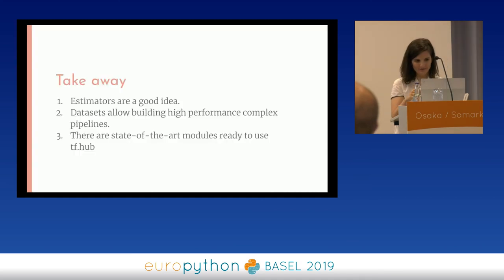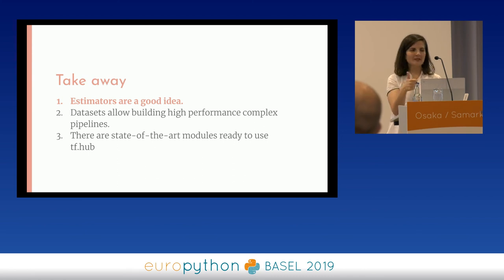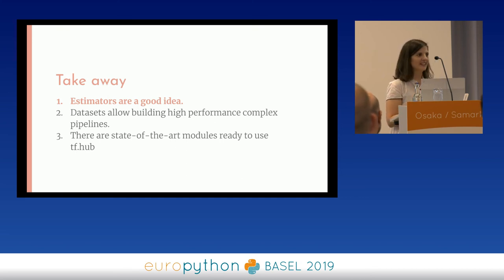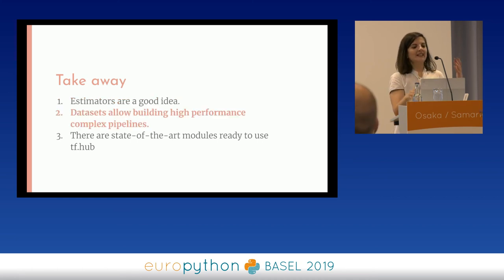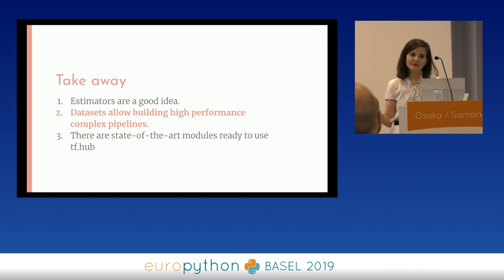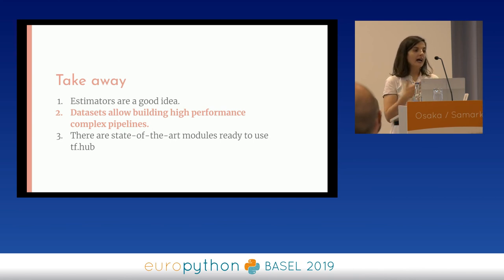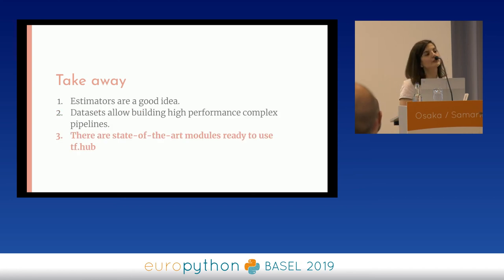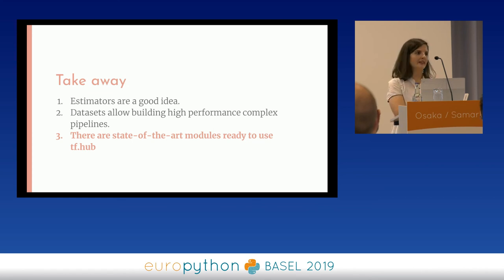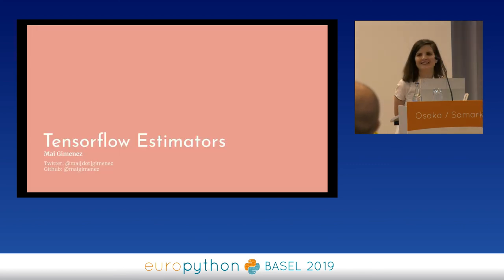Bits of knowledge to take away: Estimators are a good idea — please, when you come back to your code, you shouldn't spend more than five minutes figuring out where your model or training is. You should know where everything is. Datasets allow for building high-performance complex pipelines, so if you build an amazing TensorFlow estimator pipeline, you want to feed it fast, not with slow data. And finally, you have state-of-the-art pre-trained modules to use in TensorFlow Hub. If you've invented a really nice thing, please share it — the community will be very thankful.